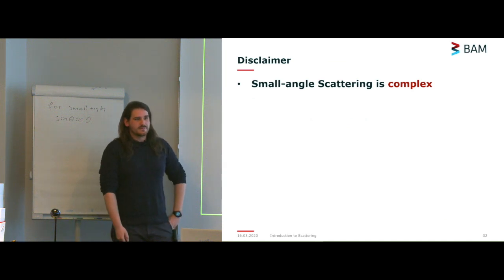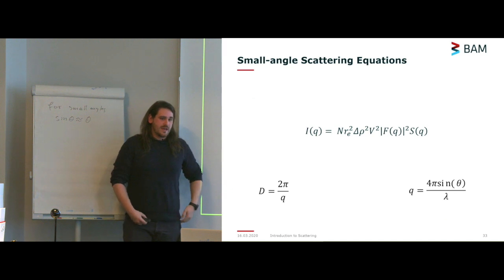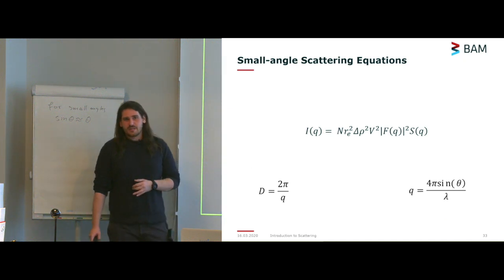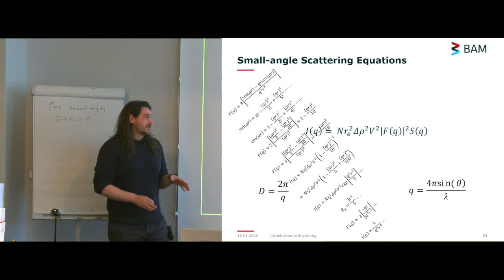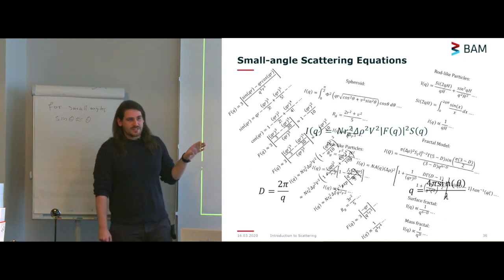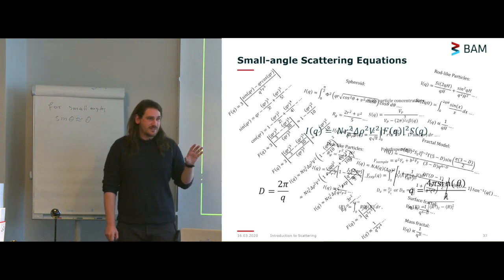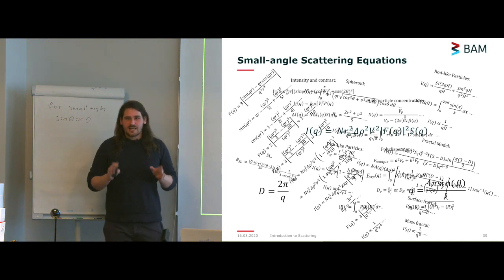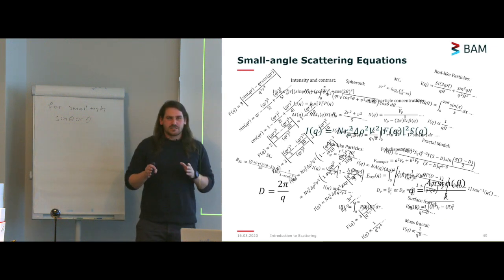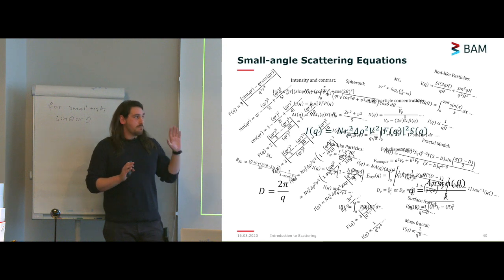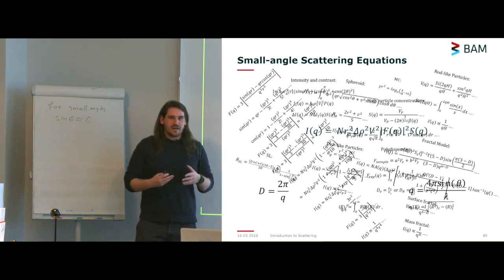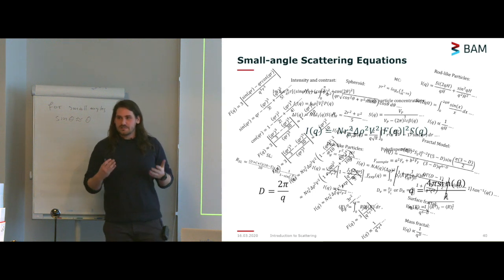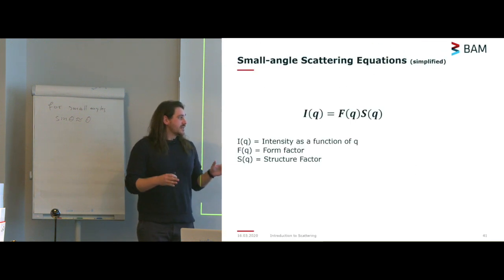What do I mean by small angle scattering being complex? We can talk about equations, but the idea of this talk is not to go into too many equations because it can be confusing. I want you to get a practical knowledge. There are lots of equations that go with SAXS, and after this talk we can discuss how the maths works. For now, I just want to keep it as simple as possible. I think it's always better to have a working knowledge backed up by equations, but for this talk, all I want you to have is a basic practical idea of what small angle scattering is.